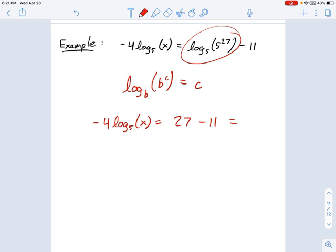We have, well, what's 27 minus 11? That's 16. Divide each side by negative 4, and you get log base 5 of x equals 16 over negative 4, which is negative 4.